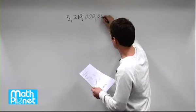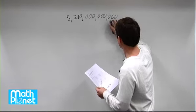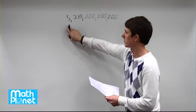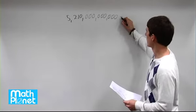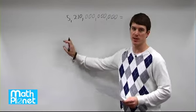So what do we have here? We've got hundreds, thousands, millions, billions, and trillions, so 5.2 trillion basically. So we want to write that in a much more concise way.